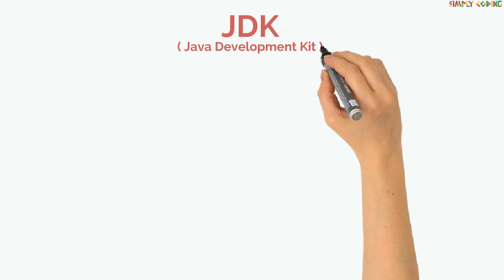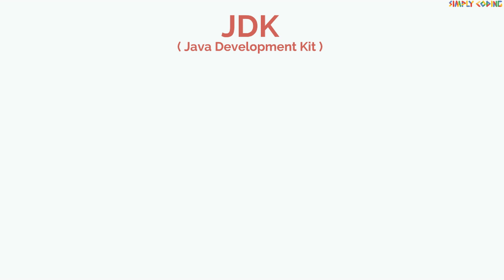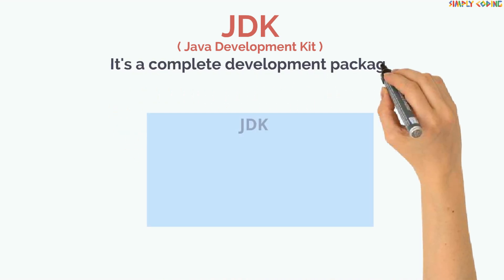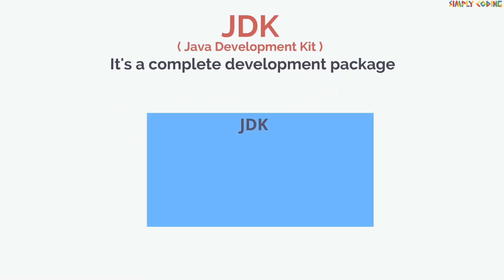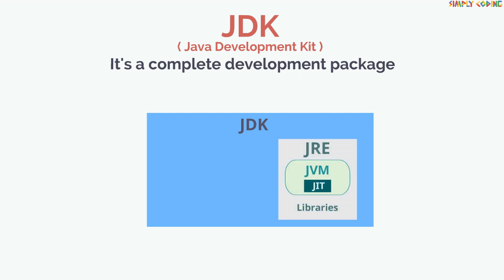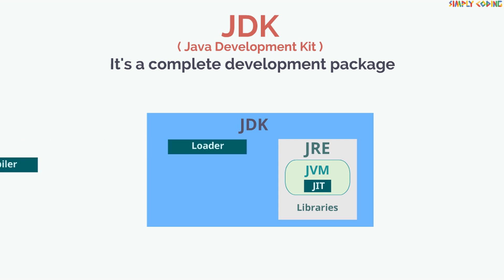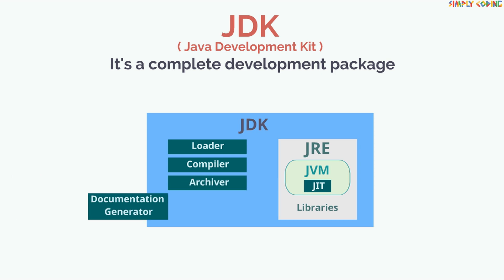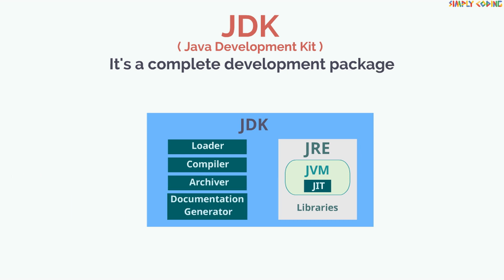To write Java programs, we use JDK, or Java Development Kit. JDK is nothing but a complete development package which contains a private Java Virtual Machine and a few other resources such as an interpreter, loader, a compiler, an archiver, a document generator, etc., to complete the development of a Java application.